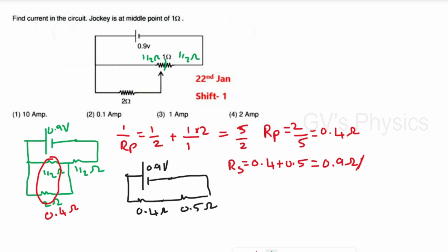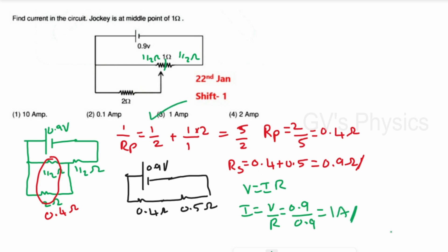Using Ohm's law, I = V/R = 0.9 / 0.9 = 1 ampere. So the current is 1 ampere. Option 3 is the right answer.